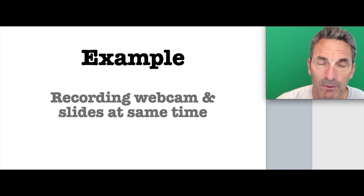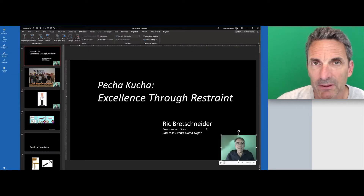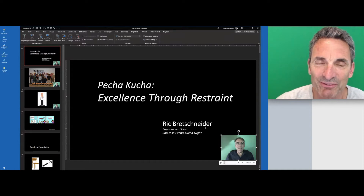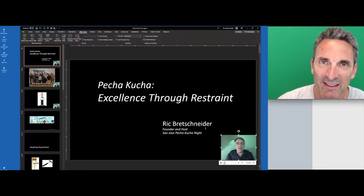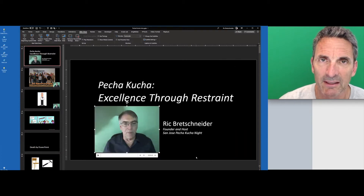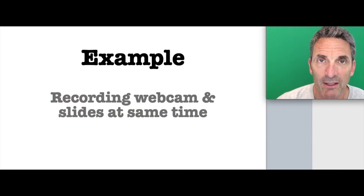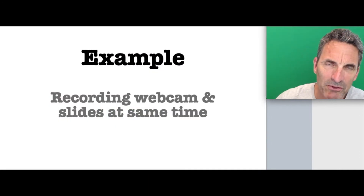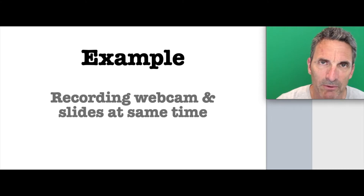As you know, in PowerPoint on Windows, you can use the webcam to record a little image of yourself. Usually the default is down in the bottom right. You can use the webcam to record your slides and sort of make a presentation that way when you can't be there live. I have some issues with that and there are some ways to improve that, but let's put that to the side.